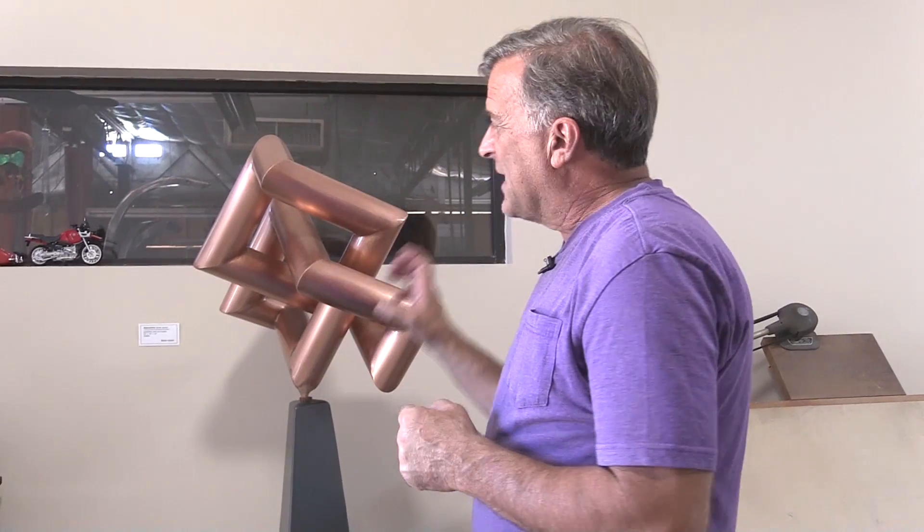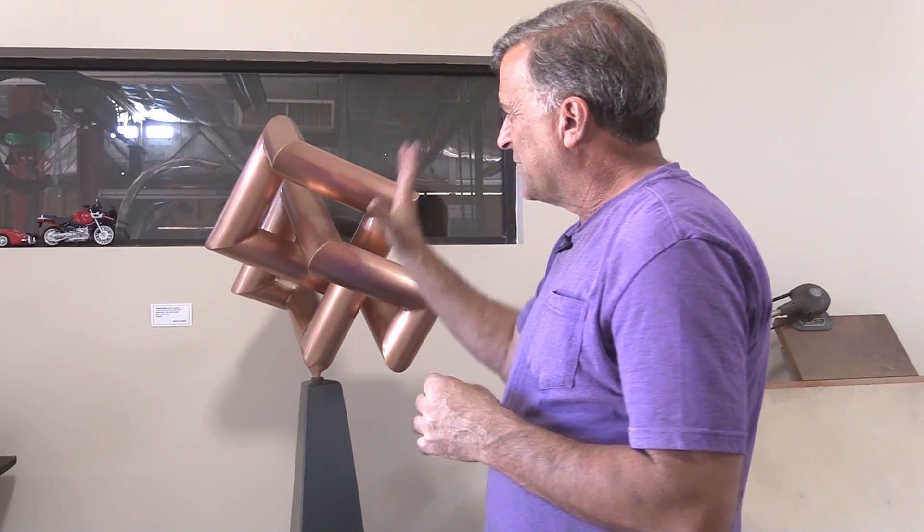It's made out of three-inch diameter, 16-gauge copper pipe - only about a sixteenth of an inch wall. It's old solar hot water heater pipe, really thin wall, really soft.